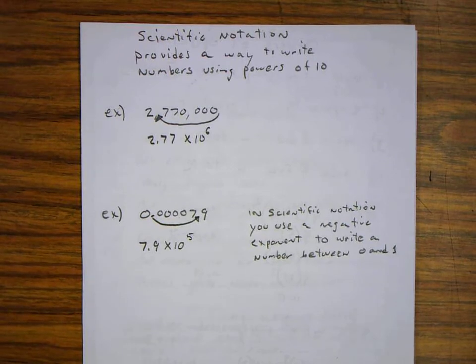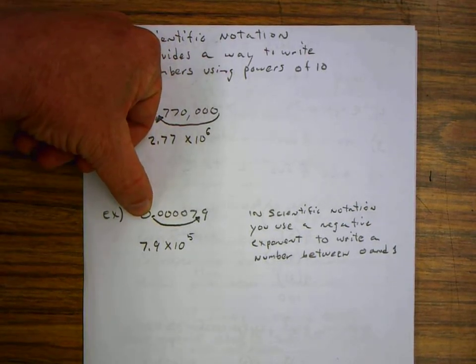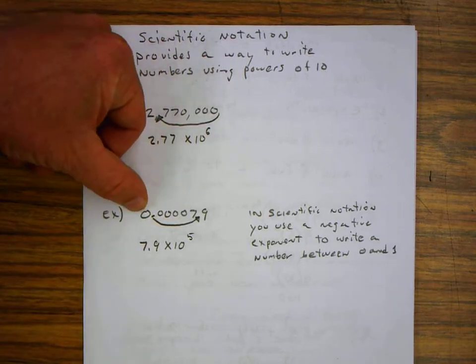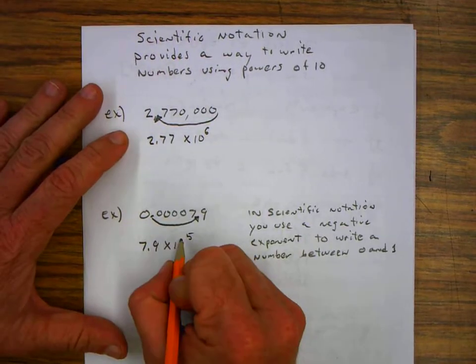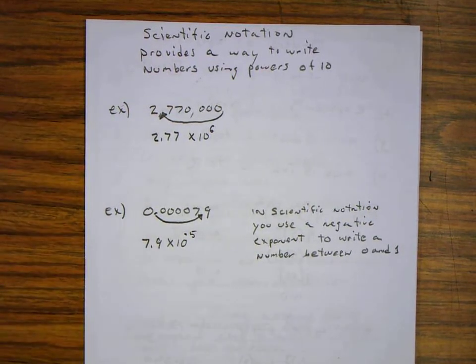Now in this case, we move the decimal point 5 places. The original number right here is less than 1, so we use a negative exponent, a negative 5 exponent. And that's our scientific notation. So we have 7.9 times 10 to the minus fifth.